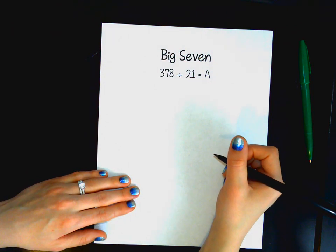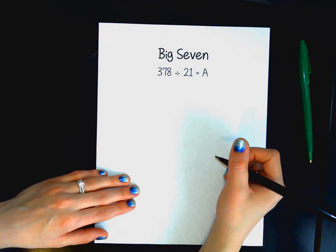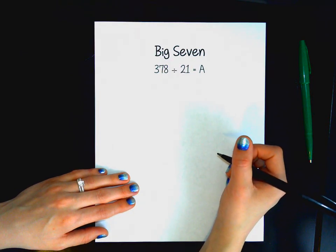All right, welcome back. I'm going to be walking you guys through the Big Seven strategy. It is a division strategy that is really awesome for tons of kids because it allows students to build on their current knowledge of multiplication to solve division.